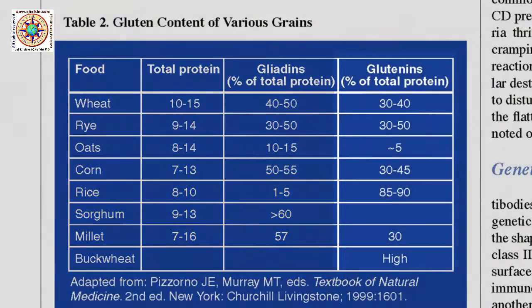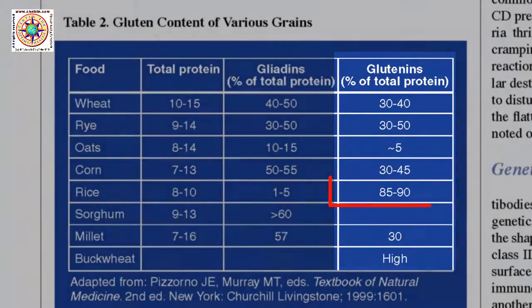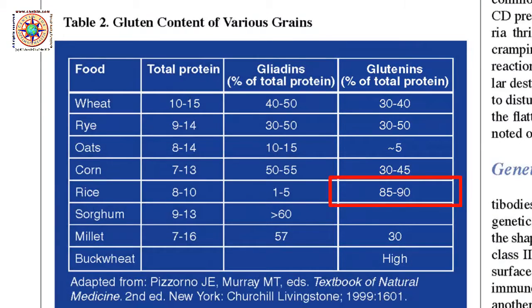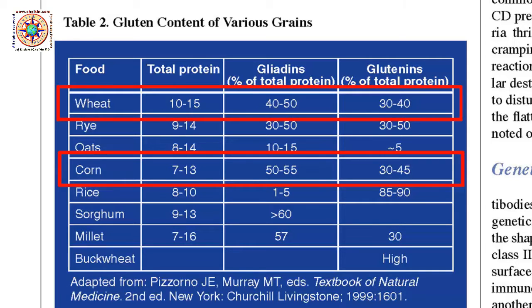When we look at the glutenin protein, rice has one of the higher values and shares this with buckwheat, but it is also shared with corn and rye. You can see that of all these foods, corn has one of the higher quantities of the combined proteins that are of concern, certainly equal to or greater than that of wheat. And indeed, we do find a growing amount of corn-related problems.